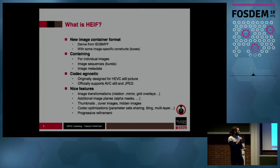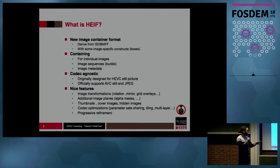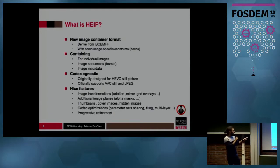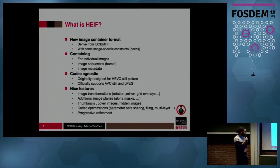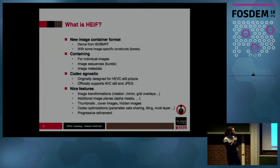We have a lot of nice features, like image transformations — for example, rotation, mirror, or grid overlays. There are also additional image planes like alpha masks. We can add thumbnails, cover images, or hidden images. You can also do codec optimizations, and we have progressive refinement as well.